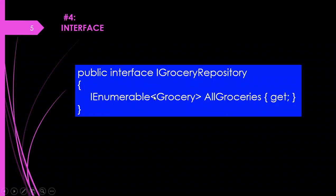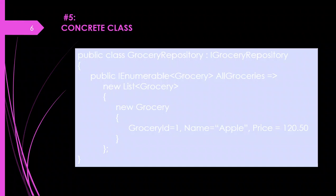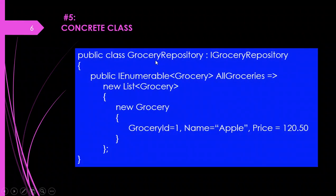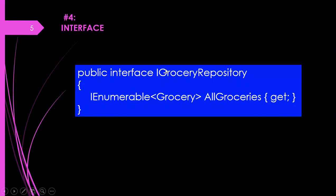The interface consists of a method called AllGroceries, which provides the skeleton for the operations we are going to perform on the domain class. We are creating a repository interface here which has the methods or operations we can perform using the domain class. Using this method, next what we need to do is implement it. We need to implement this method using a concrete class — that is, a repository class. We have just specified the name of the method in the IGroceryRepository interface.